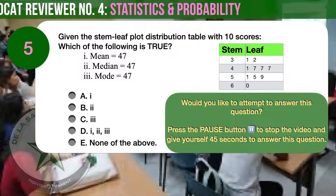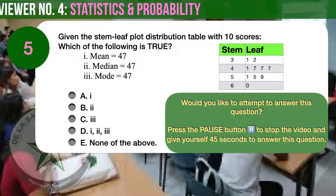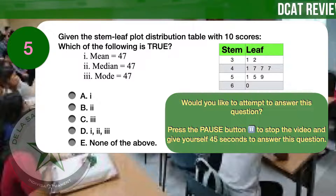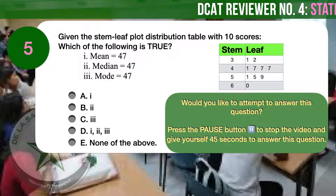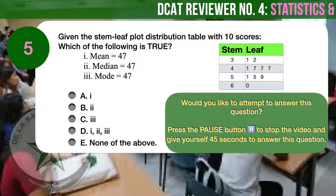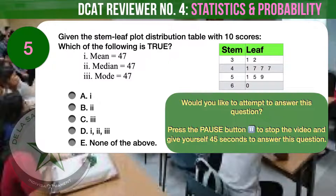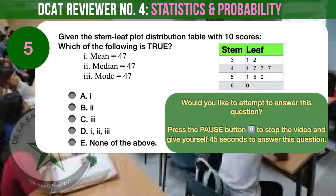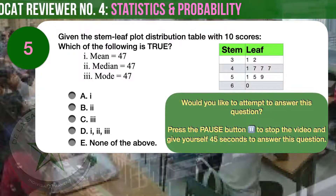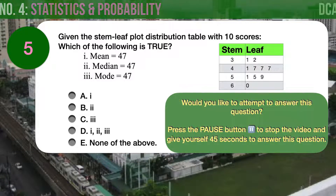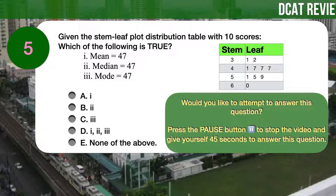Question number 5. Given the stem-leaf plot distribution table with 10 scores, which of the following is true? 1. Mean equals 47. Here are your answer choices: A, 1 only. B, 2 only. C, 3 only. D, 1, 2, and 3. E, none of the above.